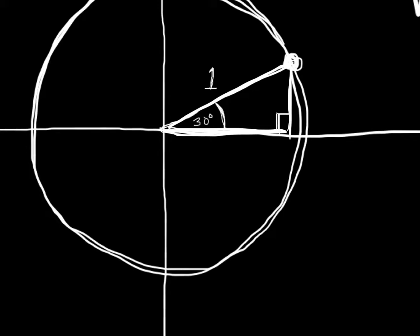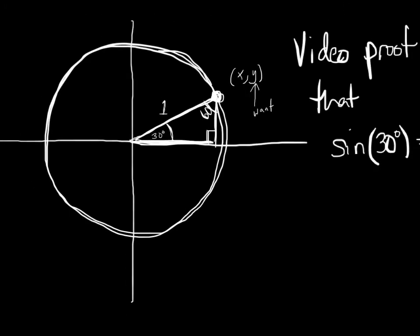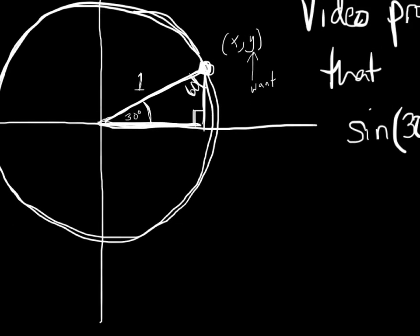Okay, and then we can deduce, actually, that this is 60. And we also want the y-coordinate. We want the y-coordinate of this point because that's the definition of sine.